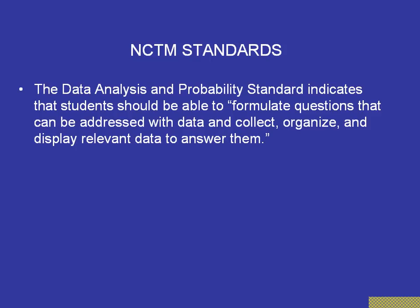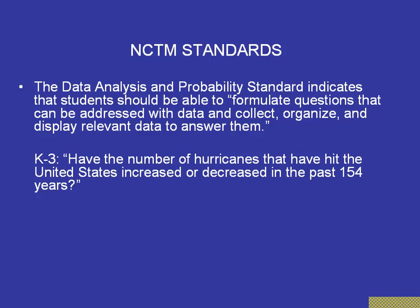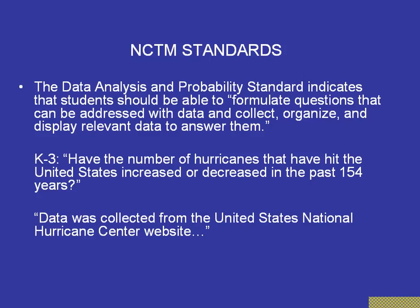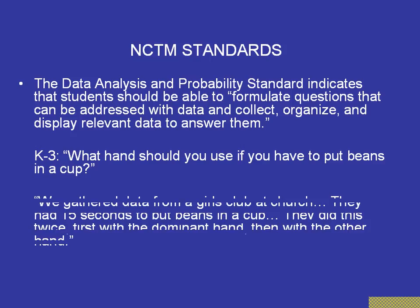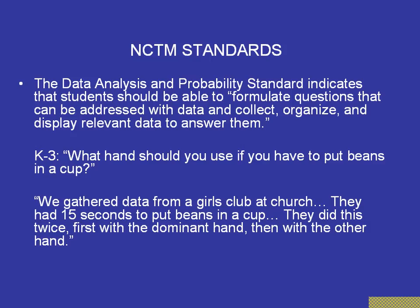The statistics poster competition has four submission categories: K through 3, 4 through 6, 7 through 9, and 10 through 12. For instance, one of the posters received by the Michigan statistics poster competition for the K through 3 category posed the question: what hand should you use if you have to put beans in a cup? They gathered data from a girls' club at church. Students had 15 seconds to put beans in a cup, doing this twice — first with the dominant hand, and then with the other.